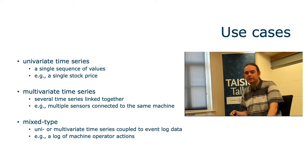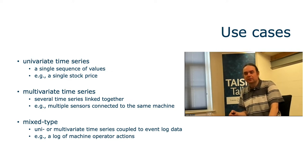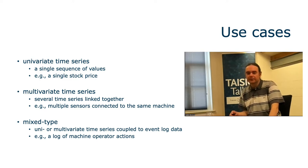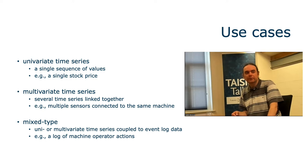A more complicated problem setting is multivariate time series, where you have several time series linked together forming some sort of entity. For example, a machine connected to several sensors measuring all kinds of information — the air temperature, the temperature of the machine itself, throughput or energy consumption — all measured at the same regular intervals, giving us a multivariate time series.